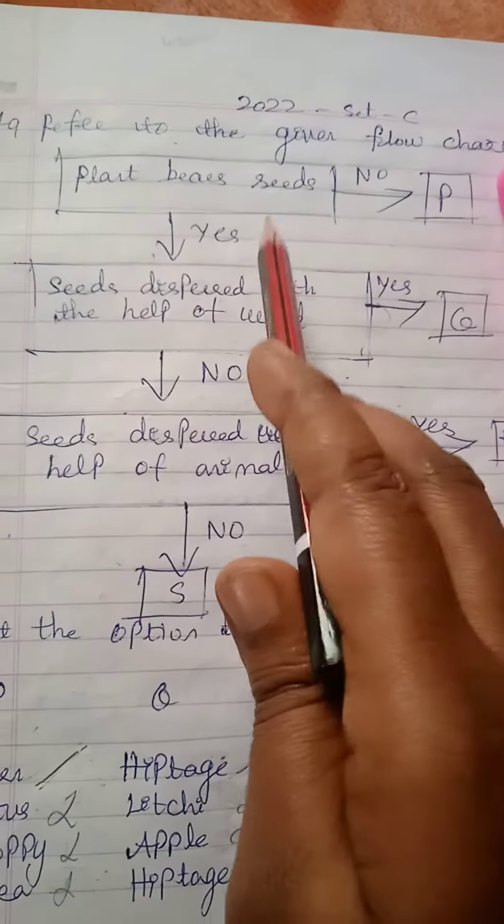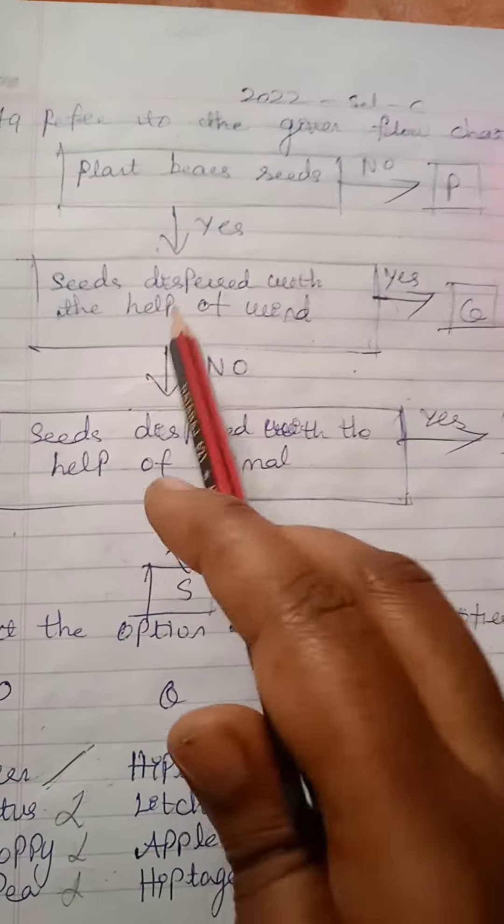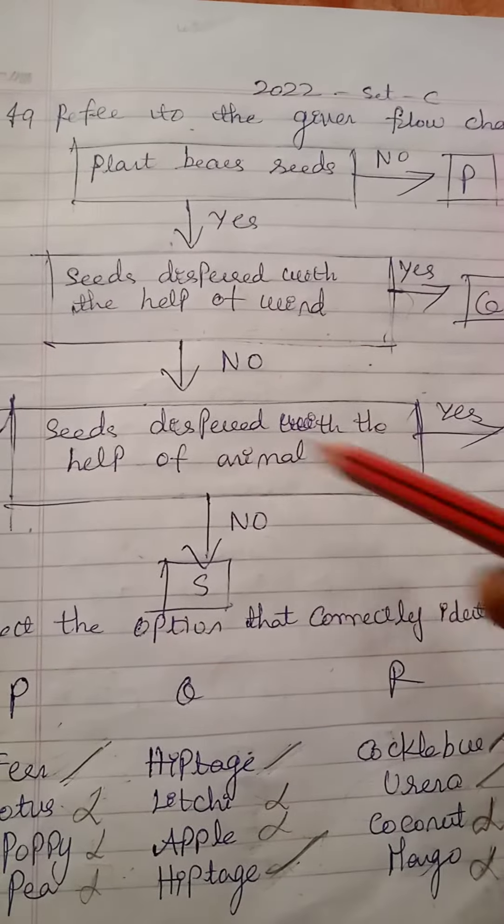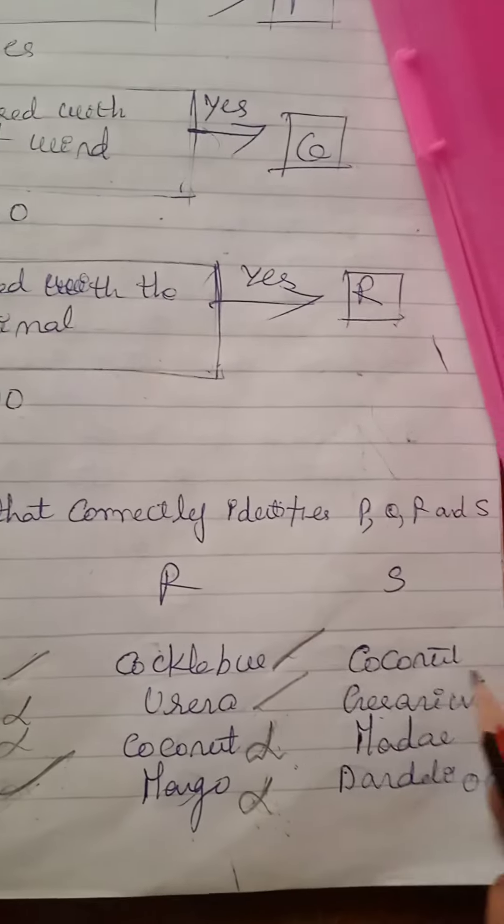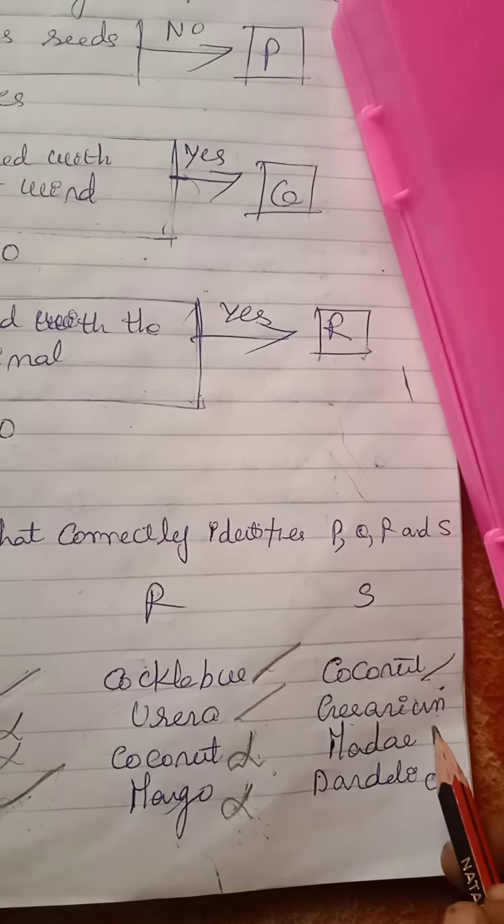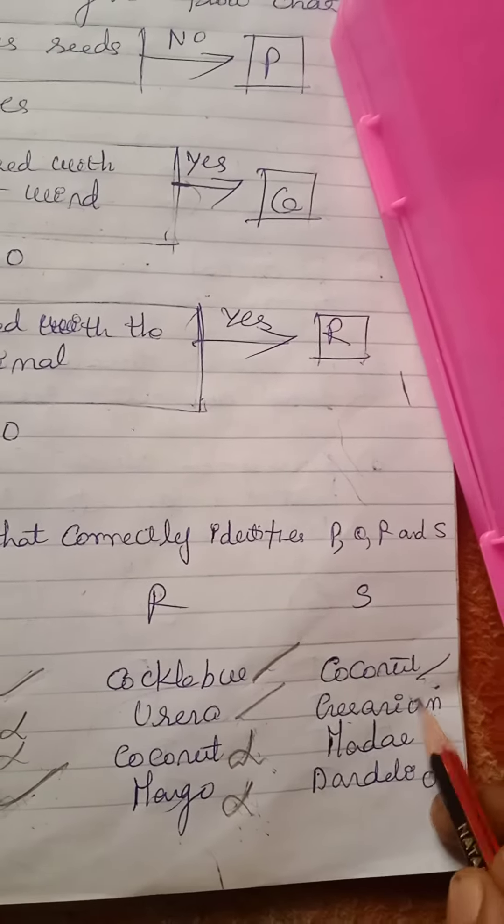Let's check S. Plant bears seeds - yes. Seeds dispersed with the help of wind - no. Seeds dispersed with the help of animal - no. Here under S, coconut gets dispersed by water so it will come. Geranium gets dispersed by explosion so it will come.